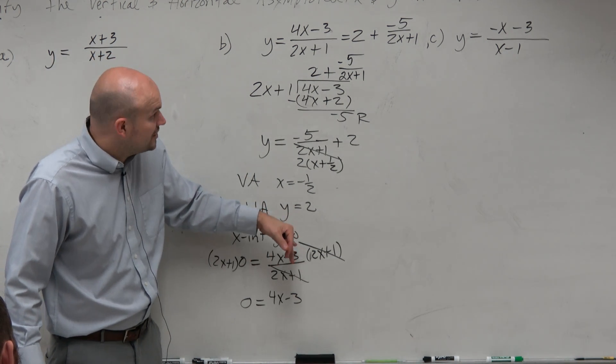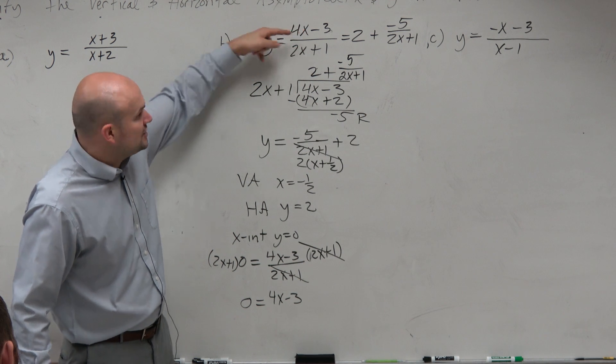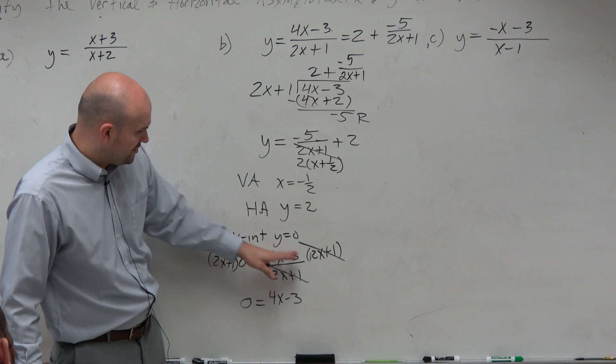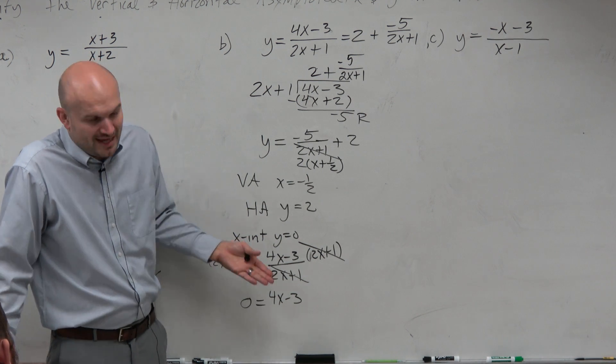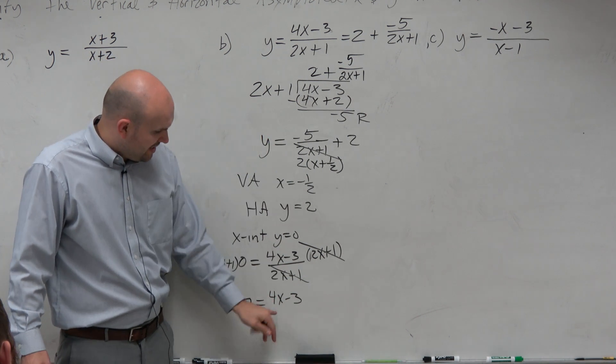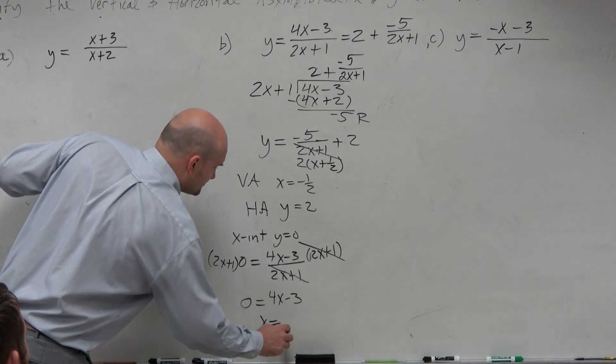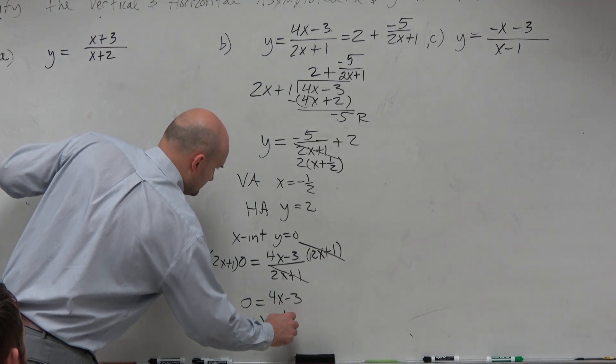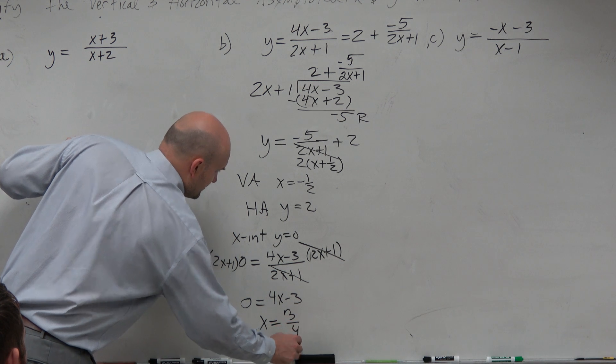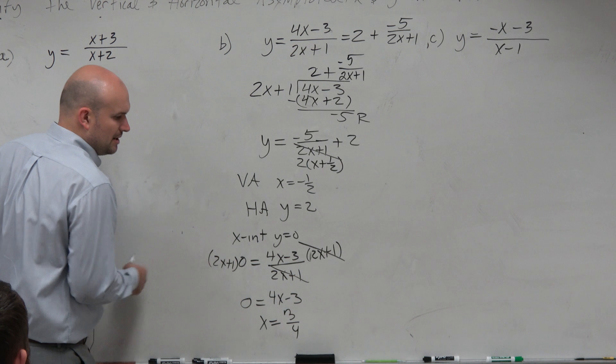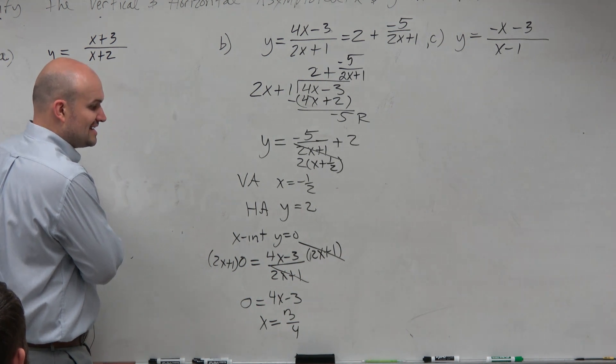When you have a rational expression equal to 0, just set the numerator equal to 0. You don't have to go through all these steps. You can to physically understand it. But the quick, easy way to do this is just set the numerator equal to 0. Because it's going to go 0 and that divides to 1. So we get x equals 3 fourths.